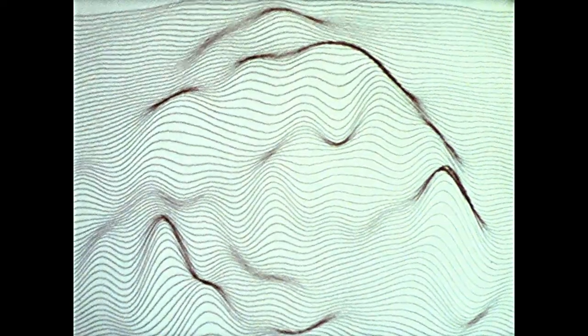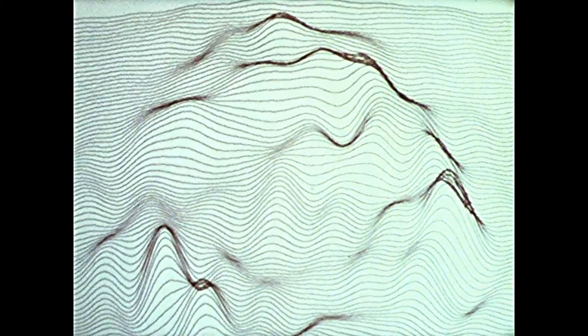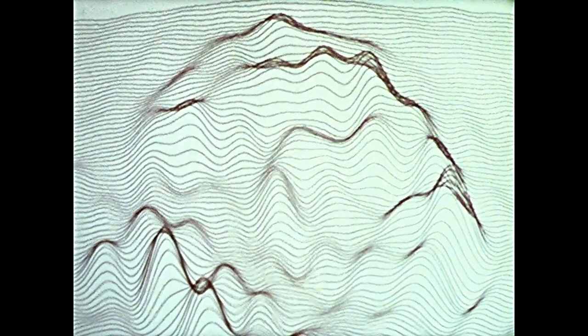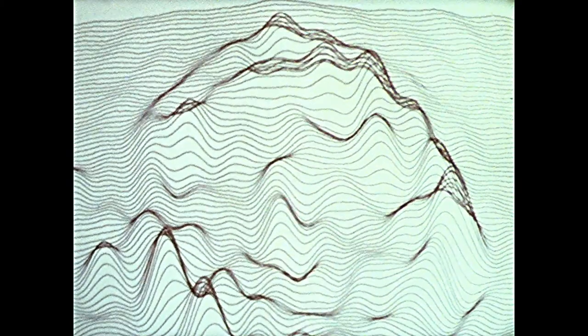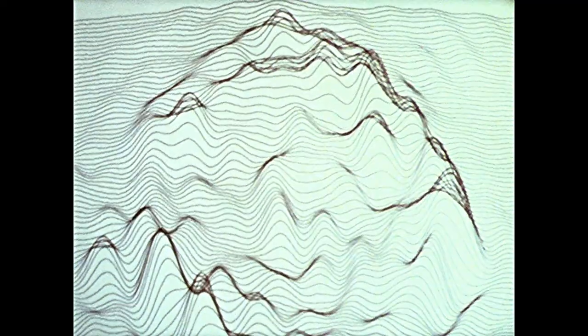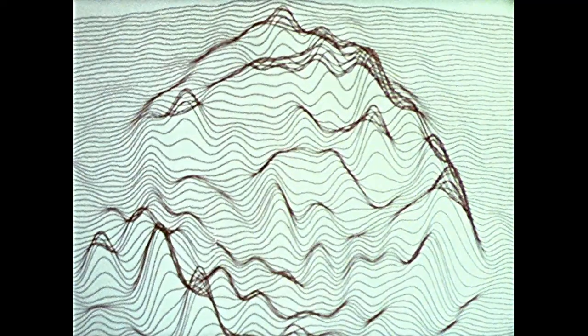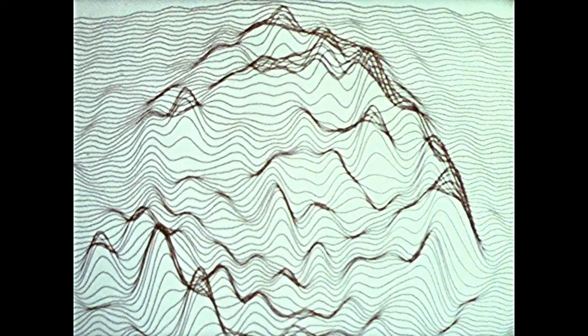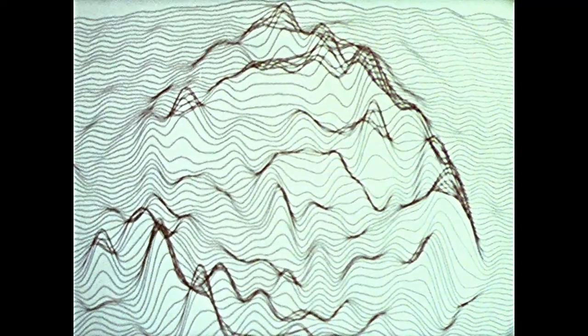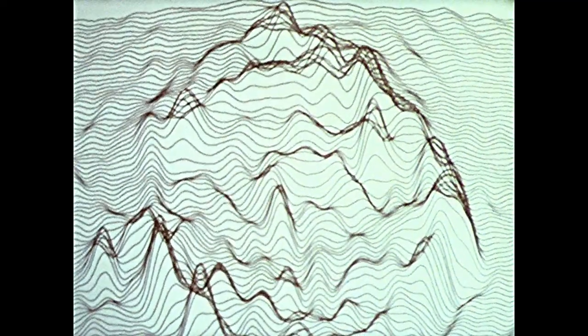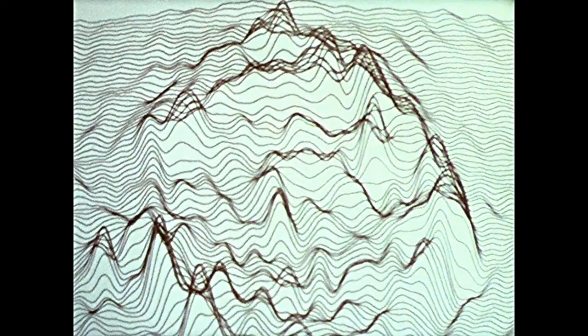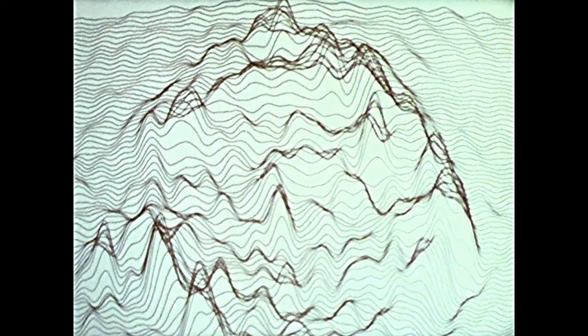For this illustration, the computer was used to build up a map of a complex radio source, one of the strongest in the sky. As the computer adds successive observations with the aerials further apart, we can see finer details in the structure of the source. We finally have a map showing all the details that we could observe with a single telescope a mile in diameter, if we could have built one.